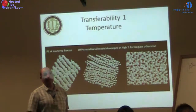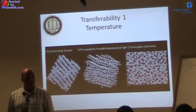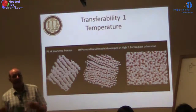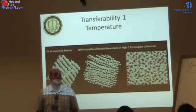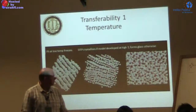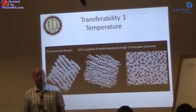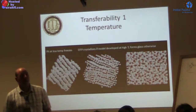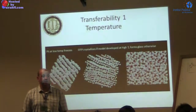On the right is ortho-terphenyl (OTP), the fruit fly of organic glass formers — it forms a very nice glass. OTP optimized at 300 K and simulated at 300 K gives a nicely disordered system. In the middle, OTP optimized at 300 K but simulated at 230 K gives a crystalline structure. At 230 K we are below TG, the glass transition temperature of about 260 K — meaning the system crystallizes and does not form a glass.